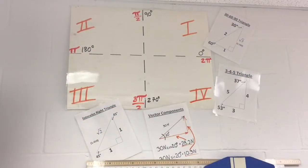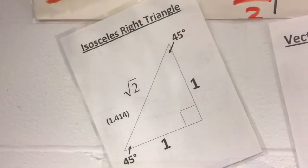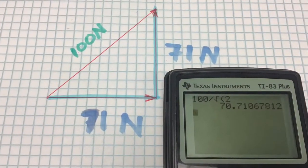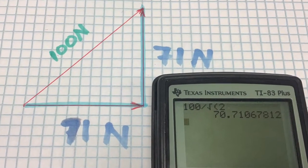And posted on my wall are the common triangles. This is one, an isosceles right triangle, and there it is. Square root of two to one ratio. Hypotenuse divided by the square root of two gives you 71 newtons.